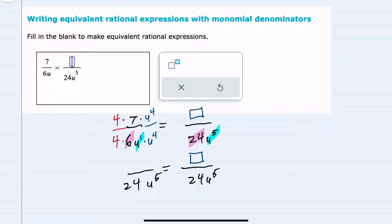In the numerator I have 4 times 7 or 28, and a u to the 4th. Now in order for these fractions to be equivalent they need to have an equivalent denominator as they do. But the numerator must also be equivalent.